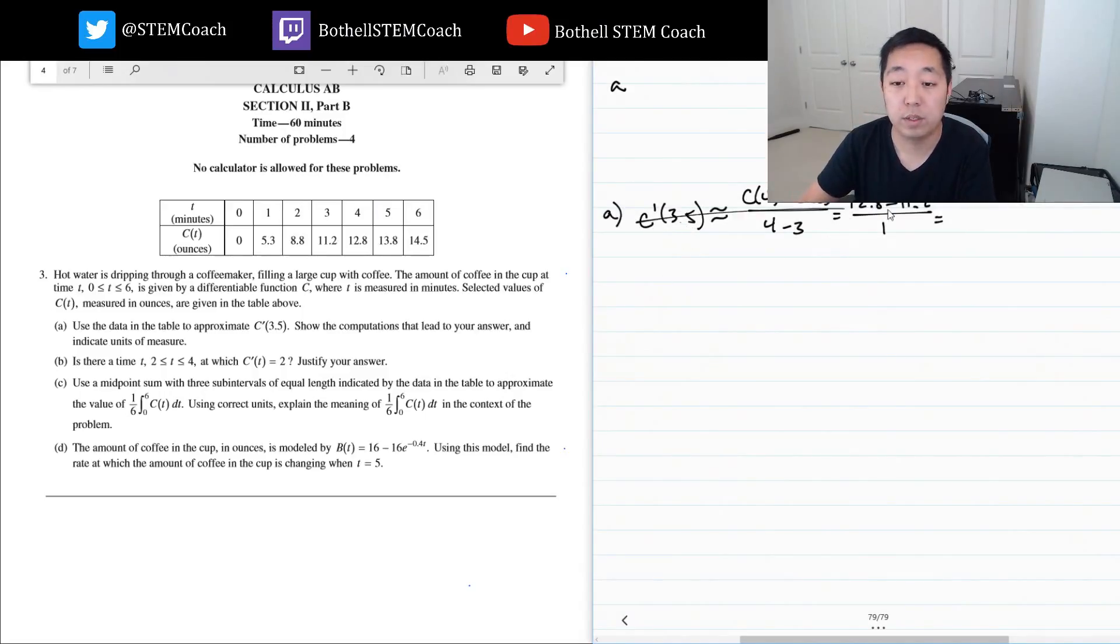I'll rewrite it down here. c prime of 3.5 is about equal to c of 4 minus c of 3 over 4 minus 3, which equals 12.8 minus 11.2 over 1. That would be 1.6, and the units are ounces per minute because that's the rate. The top is in ounces, the bottom is time in minutes.